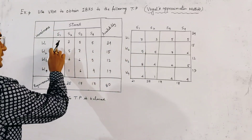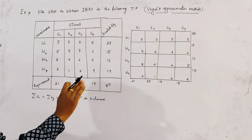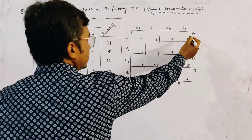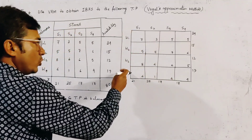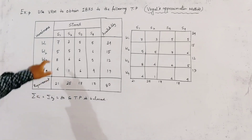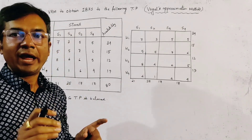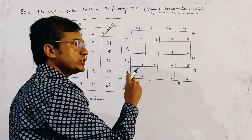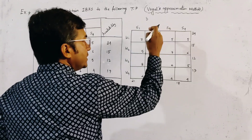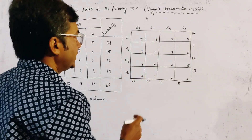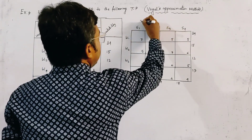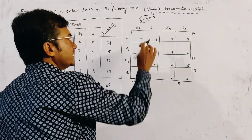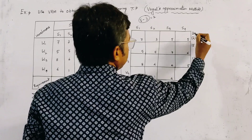We write each cost — that is 7, 3, 5, 5 — in the corresponding cell, with the cost element in the right lower cell. Here are the availability and here are the requirement. These are four warehouses and these are four stores. To use VAM, we first find out the penalties of each row and each column. For the first row, to find the penalty, we find the lowest cost, which is 3, and the next lowest cost, which is 5. The difference is 2, and this is the penalty for the first row.